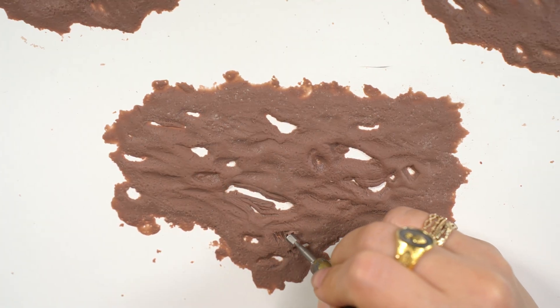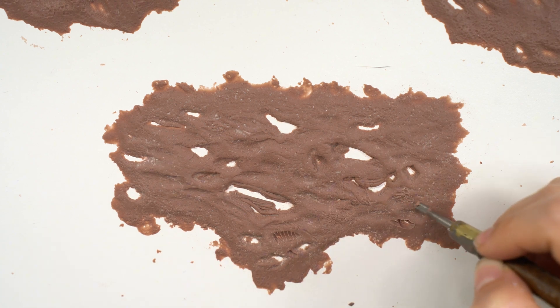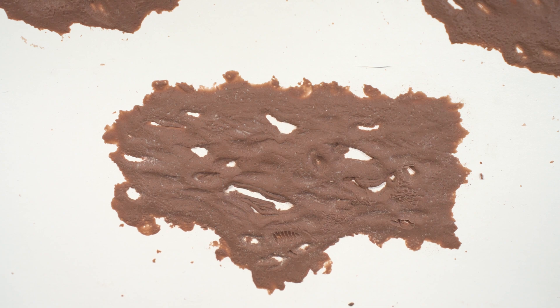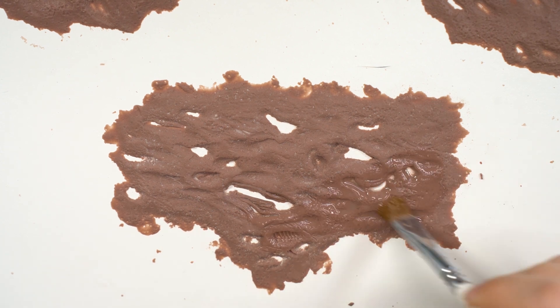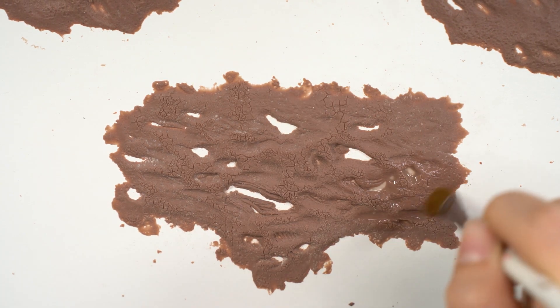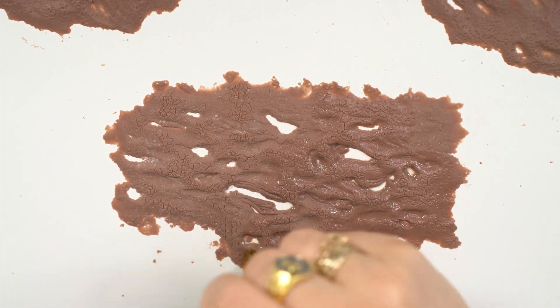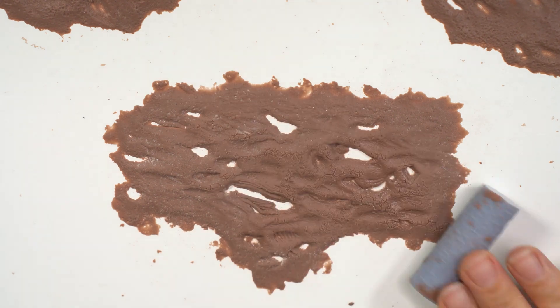So the first thing you want to do is sculpt out the prosthetic in clay. I'm sculpting this on a melanine board, I believe. You can sculpt on pretty much any smooth surface. Tile is great, glass is great. I just like these boards because you can get them for super cheap at Home Depot. You just have them cut it up.